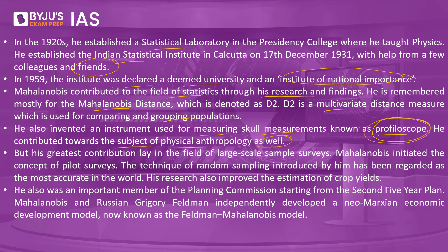His greatest contribution lay in the field of large-scale sample surveys. Mahalanobis initiated the concept of pilot surveys, and his techniques of random sampling have been regarded as the most accurate in the world. His research also improved the estimation of crop yields. He was an important member of the Planning Commission. Starting from the second five-year plan, Mahalanobis and Russian economist Grigory Fieldman independently developed a neo-Marxian economic developmental model now known as the Feldman-Mahalanobis model. In 1933, he also founded Sankhya, an Indian journal of statistics, and was instrumental in establishing the National Sample Survey in 1950.